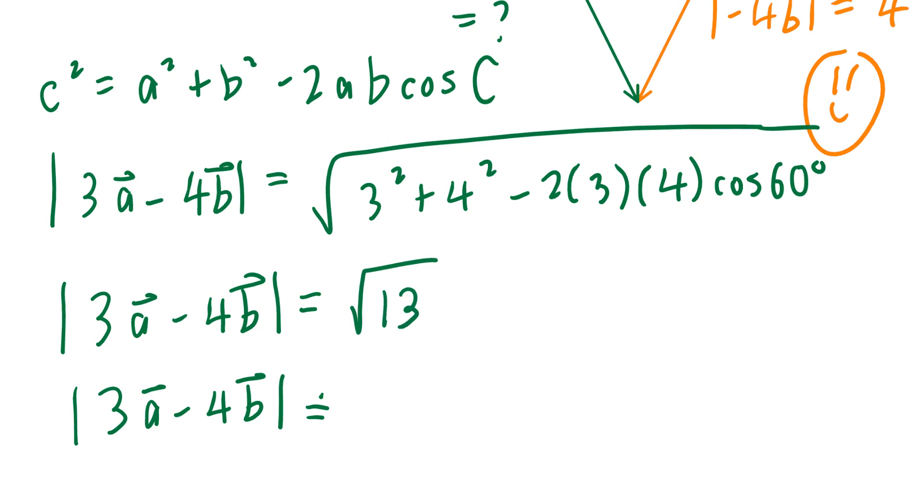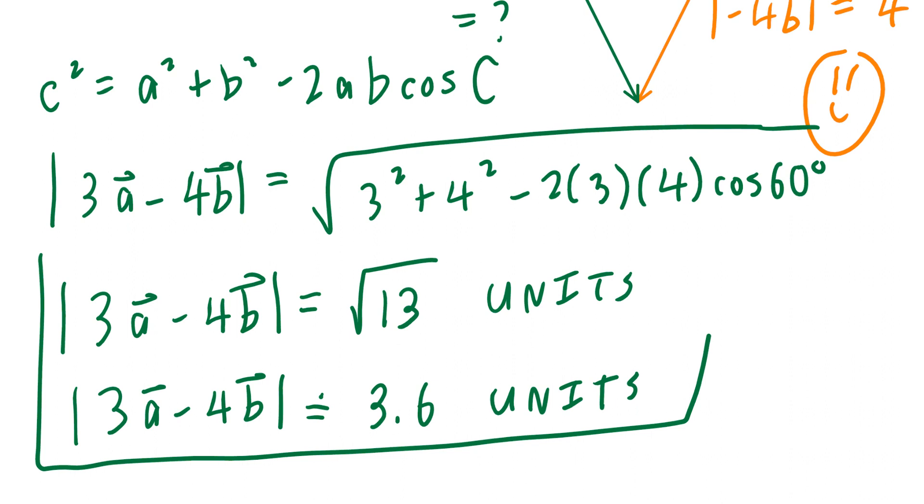If I rounded the answer to one decimal place, that's going to be approximately 3.6 units. So we have the answer in both exact form and rounded to one decimal place. I hope this makes sense. We'll be right back.